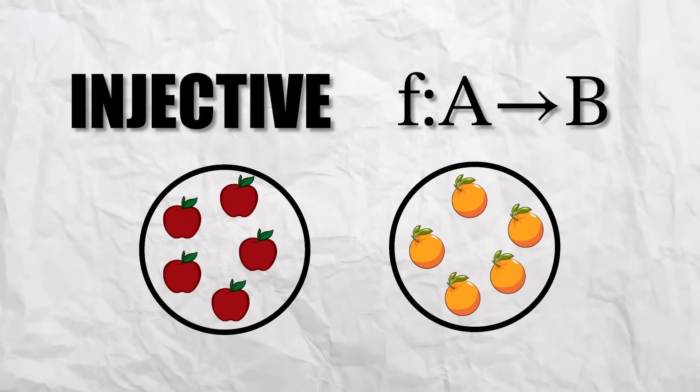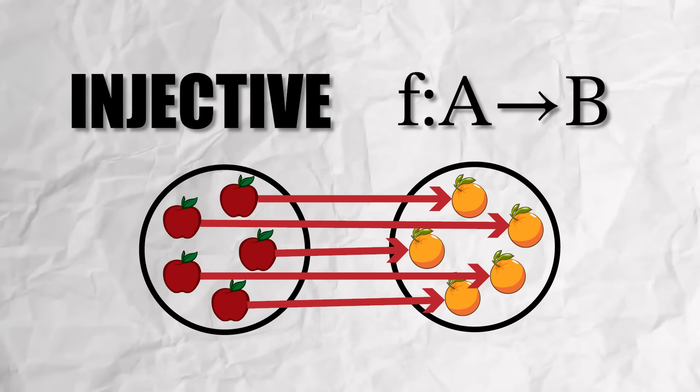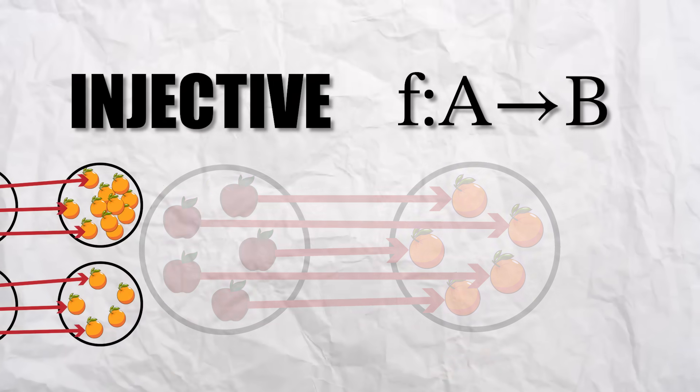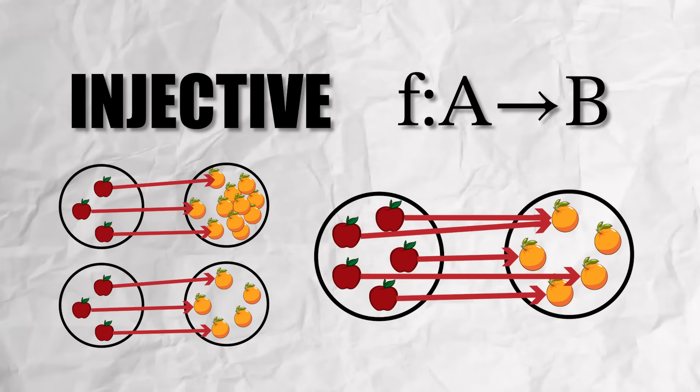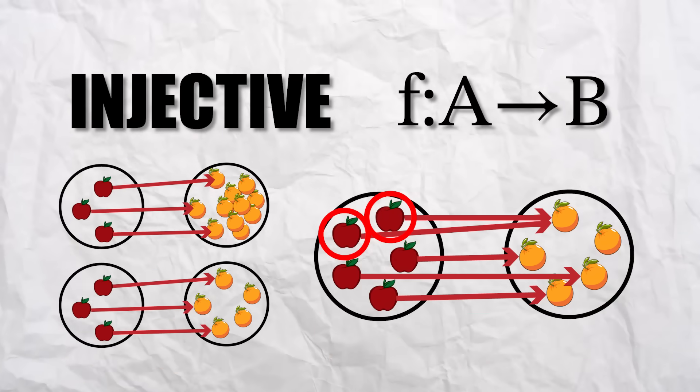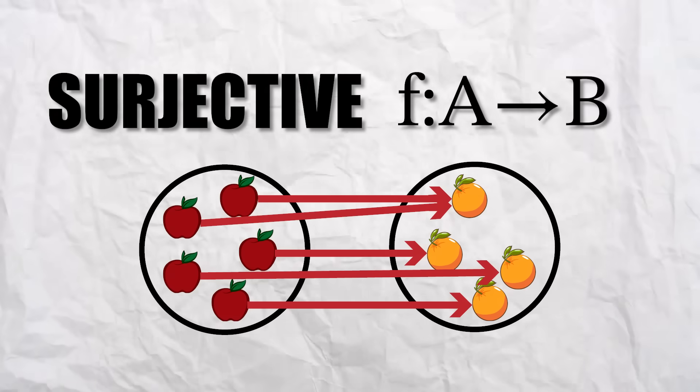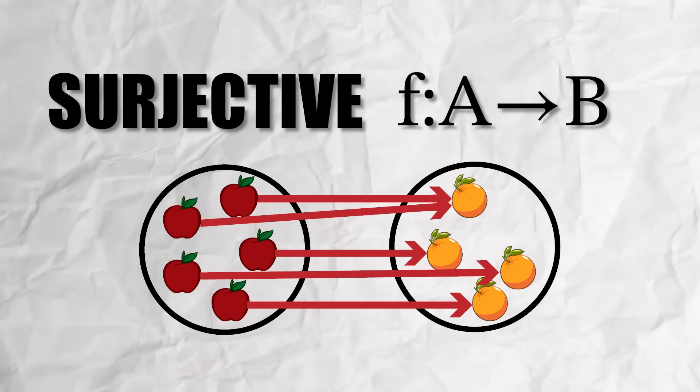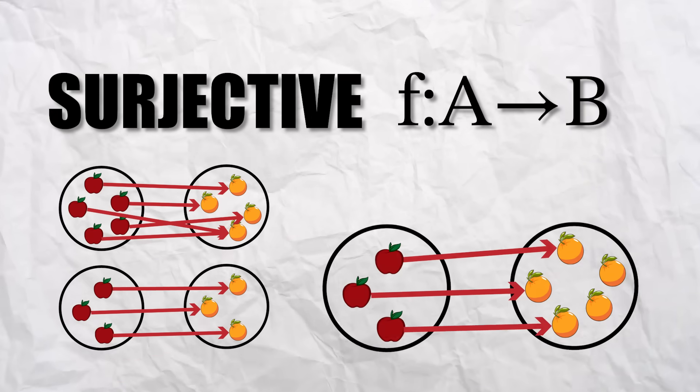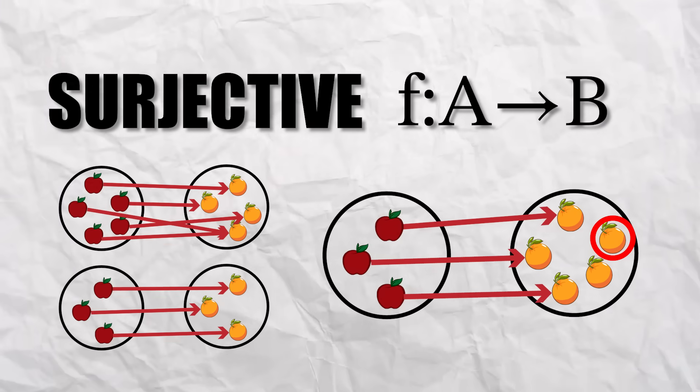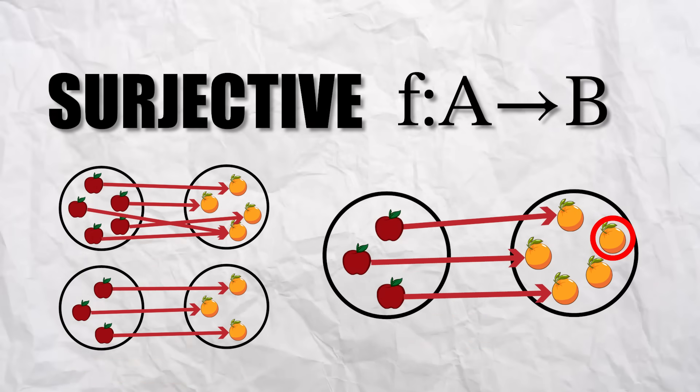We now say that a function is injective if each element in A maps to a distinct element in B. For example, these are injective functions, but this one isn't, because these two elements map to the same element in B. Now we call a function surjective if every element in B is mapped to by at least one element in A. For example, these are surjective functions, but this one isn't, because this element in B is not mapped to by anything in A.